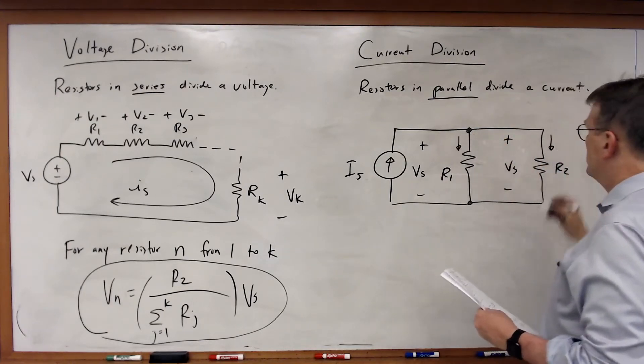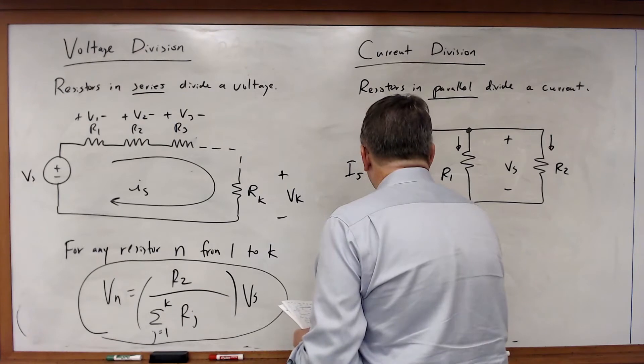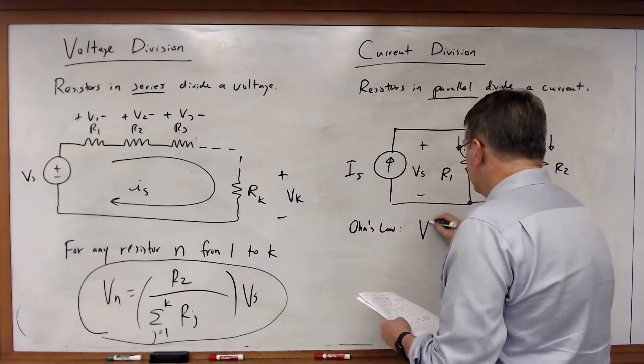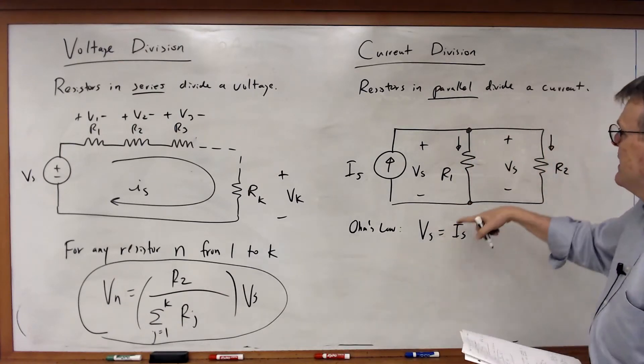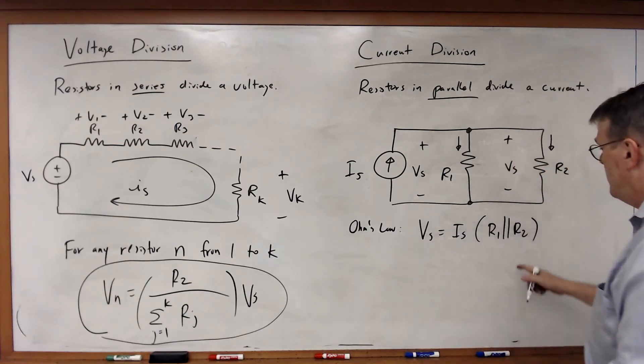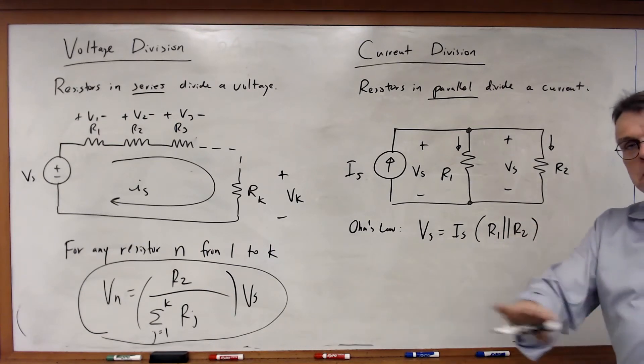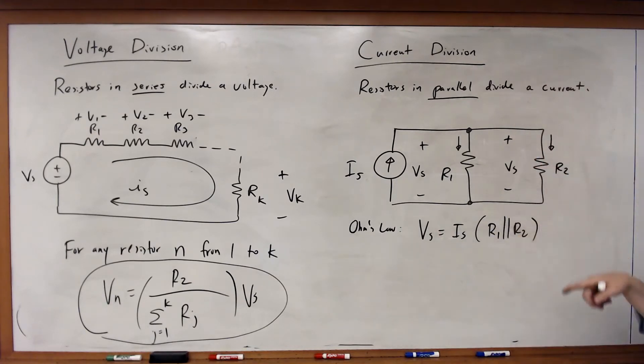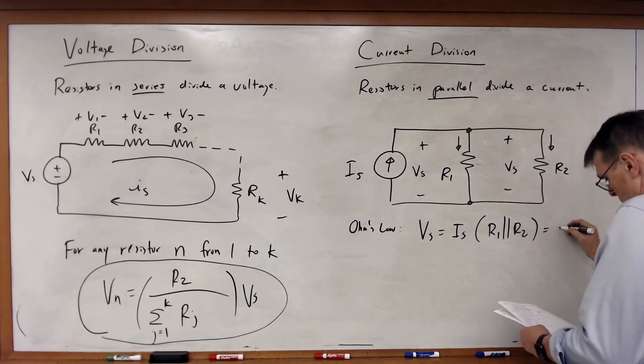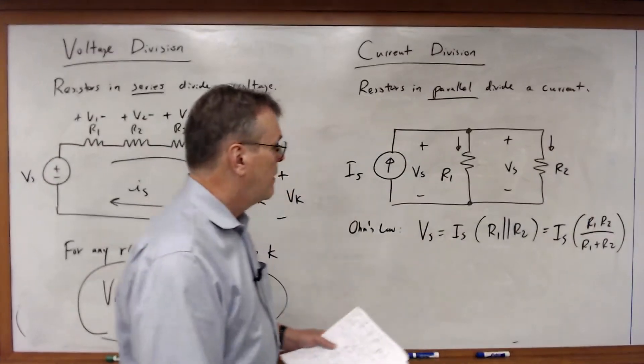And then for the currents flowing through these resistors, I can write an Ohm's law equation where VS is equal to IS times the two resistors in parallel, so R1 in parallel with R2. Notice this symbol—the double vertical strokes means in parallel with. Which means this is equal to IS times R1 R2 over R1 plus R2, product divided by sum.